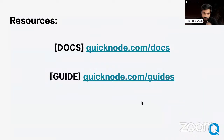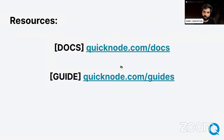Above the load balancing layer we have developer tooling layers: webhooks and advanced APIs like the NFT API and token API. The NFT API is currently available on Ethereum and Solana, and the token API on Ethereum — we'll be launching both on Avalanche soon. We also have the QuickNode HTTP and WSS URL endpoints. We use the HTTP URL to connect MetaMask to the Avalanche Fuji network.